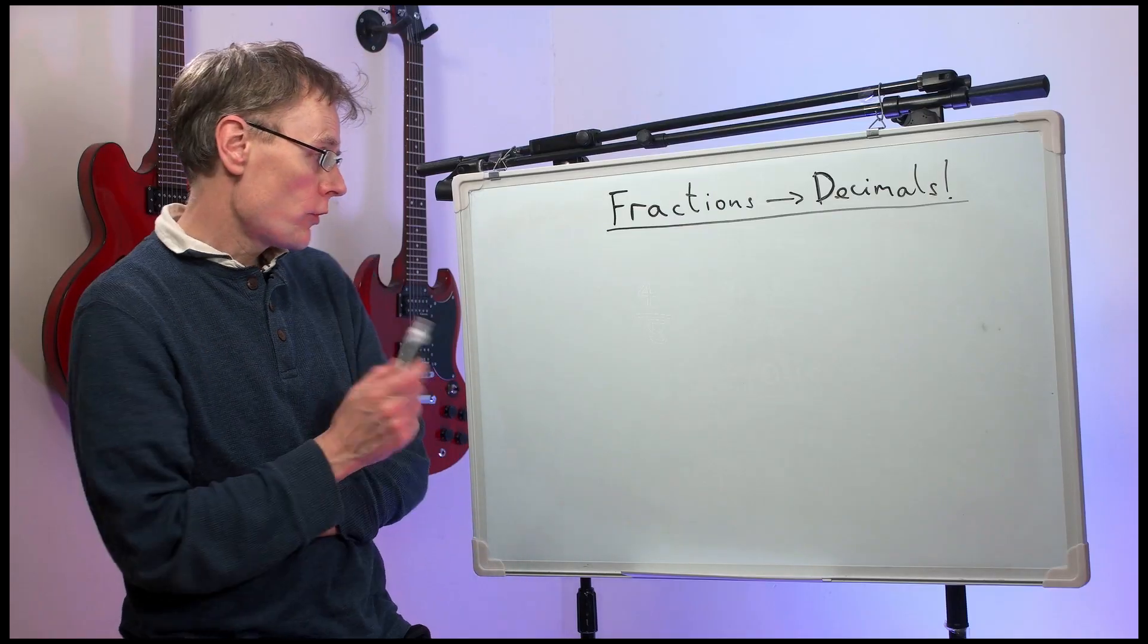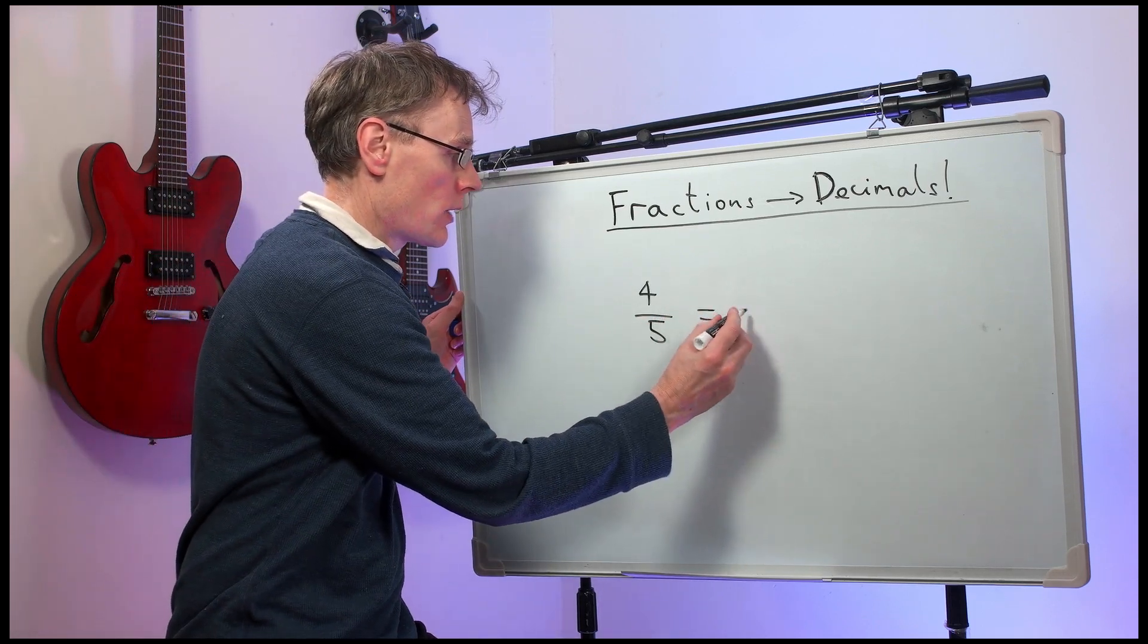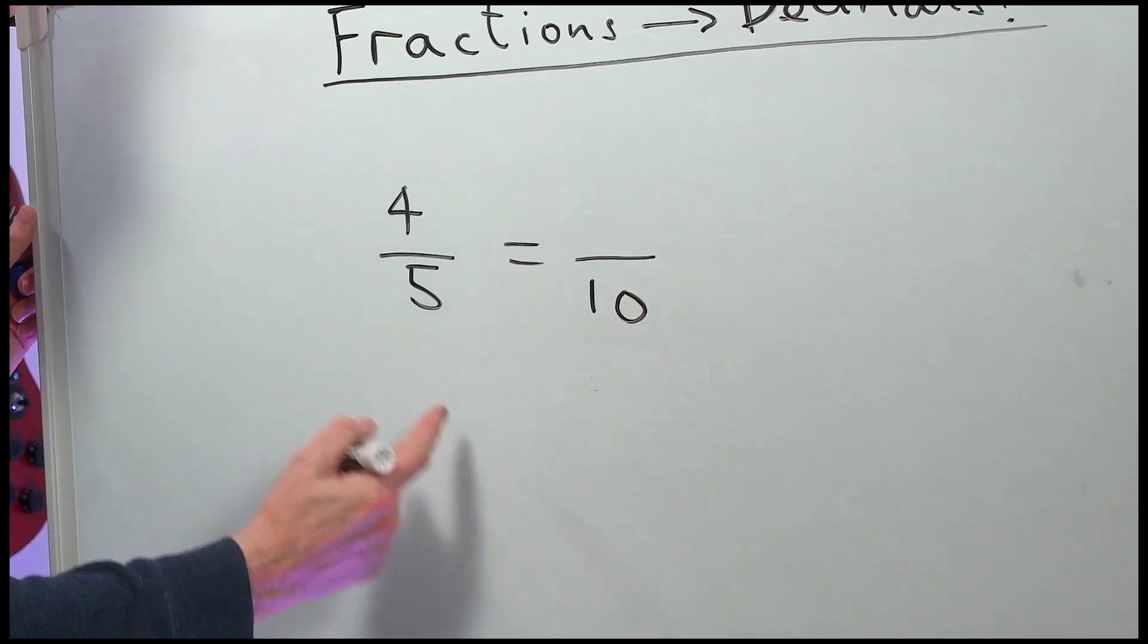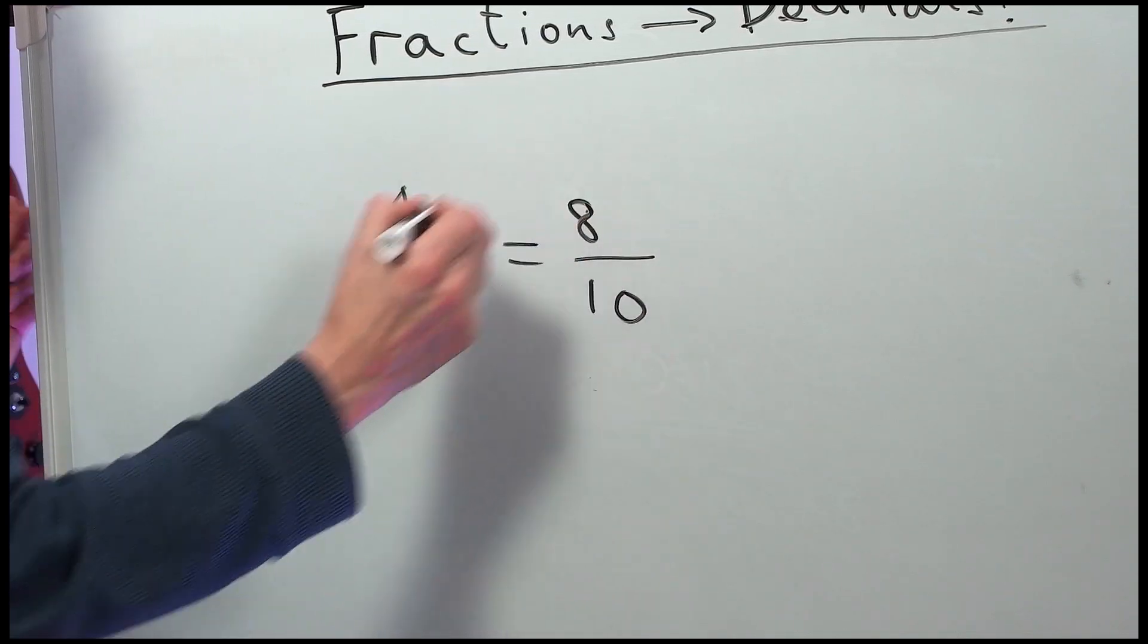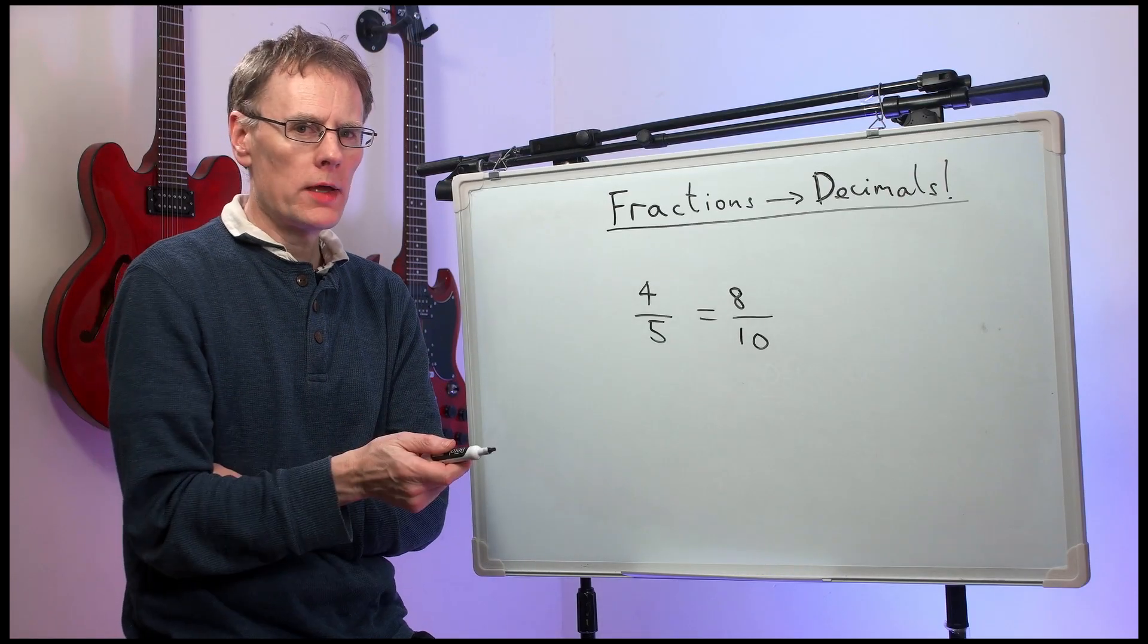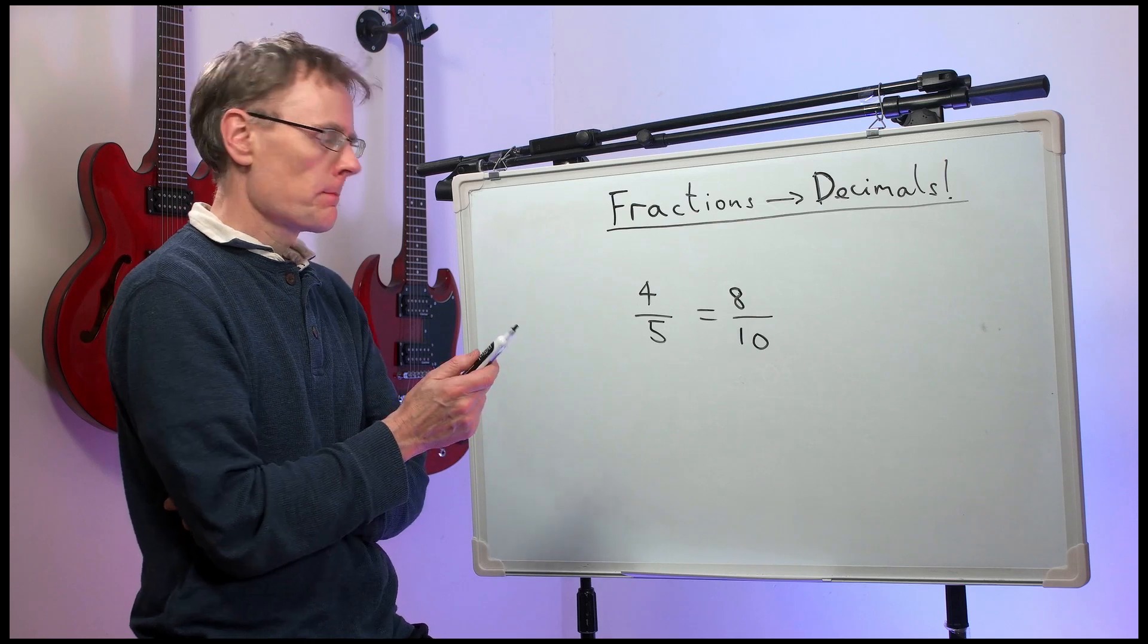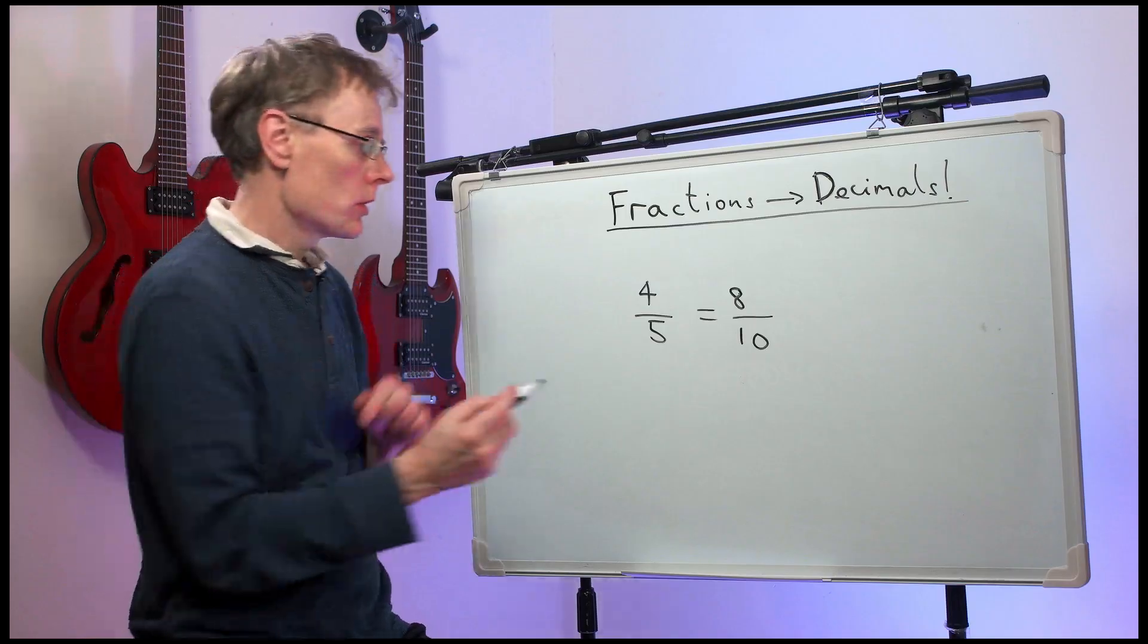Now, let's look at another one, four-fifths. Four-fifths, we can change to be something out of ten. So, we've times the bottom by two, we've times the top by two, we have eight-tenths. Which is bigger, four-fifths or eight-tenths? Well, they're exactly the same. They're both the same size. They are equal.